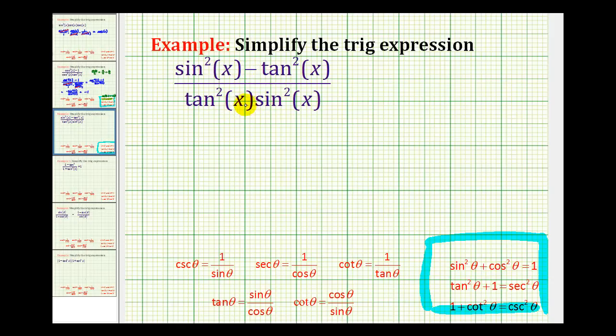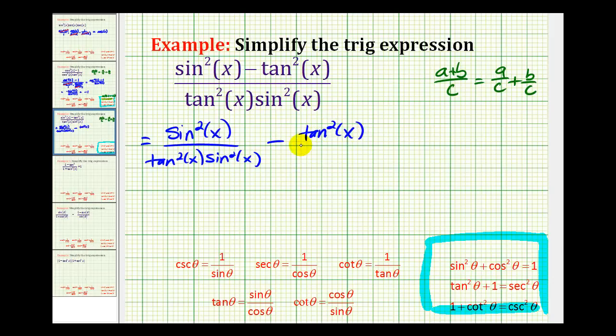But we may benefit from breaking this up into two different fractions. If we have the quantity a plus b divided by c, we can rewrite this as a divided by c plus b divided by c. So in this case, if we apply this property, we can rewrite this as sine squared x divided by tangent squared x sine squared x minus tangent squared x divided by tangent squared x sine squared x.